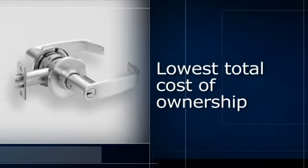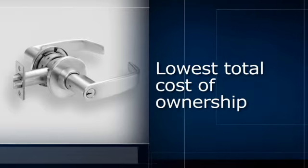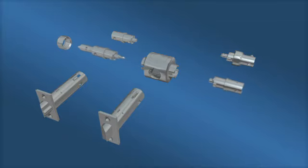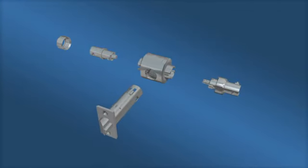The CL3100 series provides the lowest cost of ownership because it is available in 18 functions, including classroom security, retrofits any standard 161 door prep, and can integrate into most facilities' key systems.